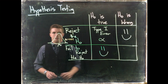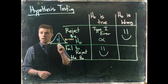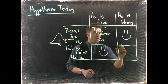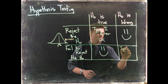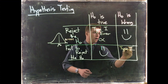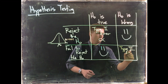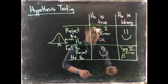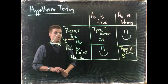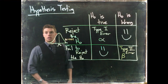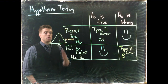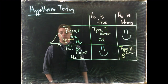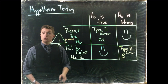That leaves us with the last square — one other type of error we can talk about — and this is a Type 2 error, affectionately known as beta. This is the error when we fail to reject the null hypothesis when the null hypothesis is in fact wrong.